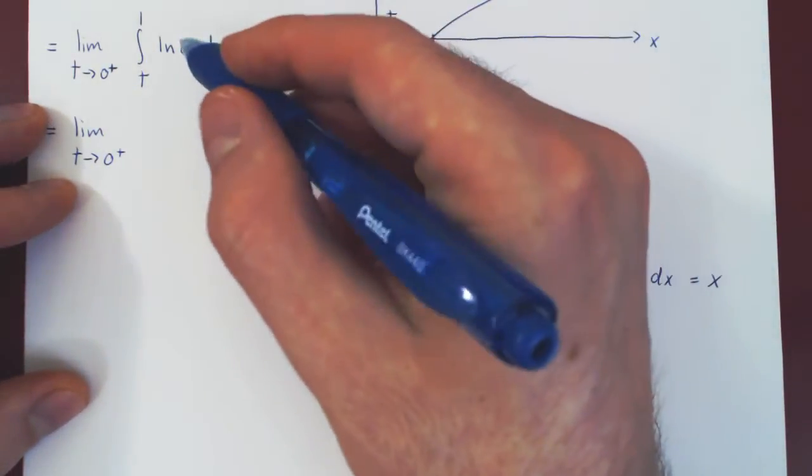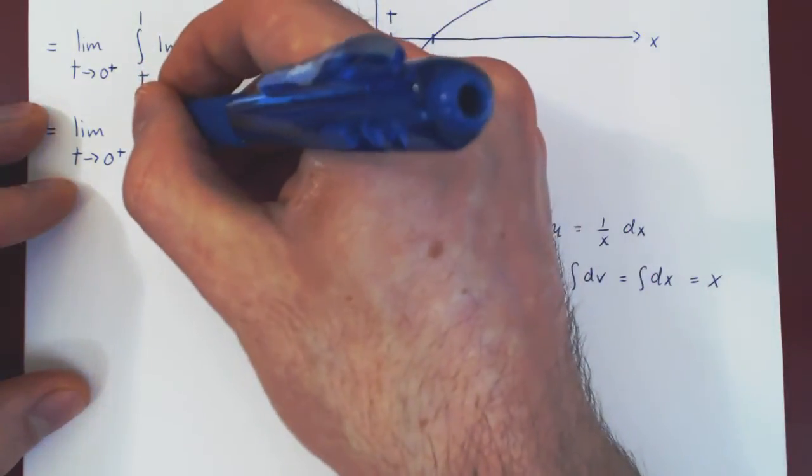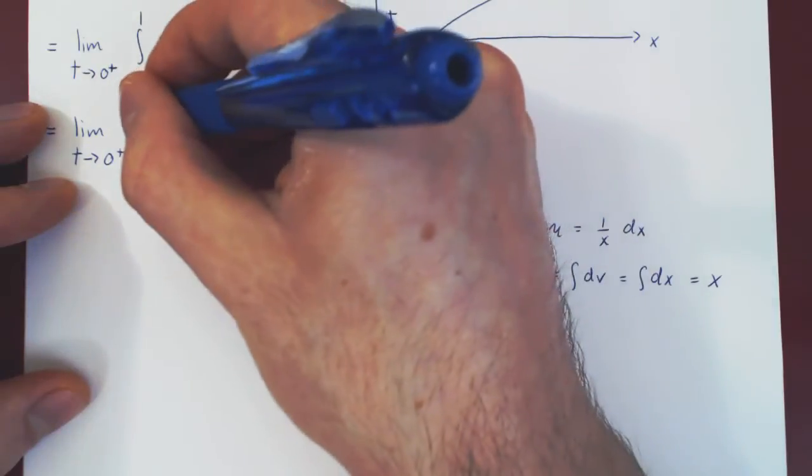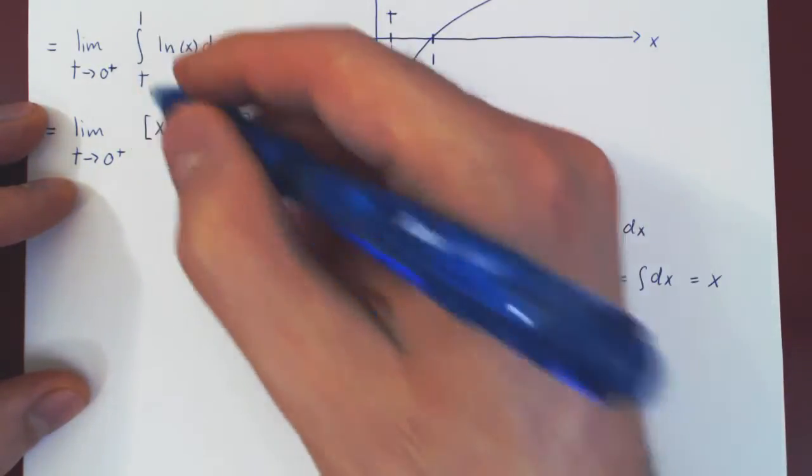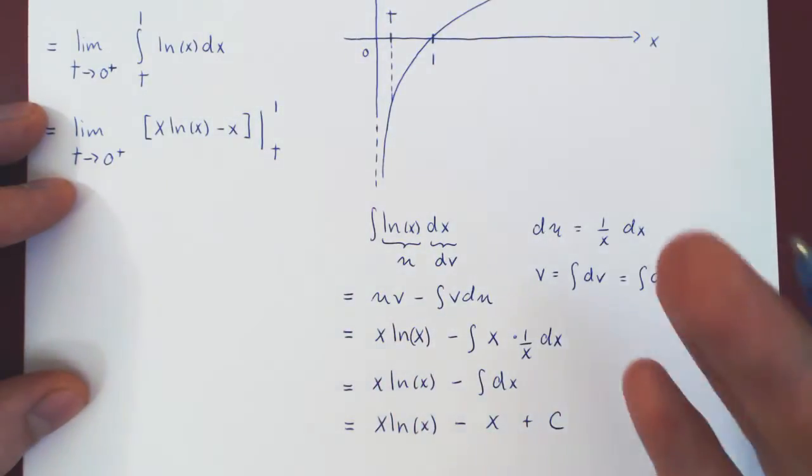To evaluate the definite integral, we need to evaluate our antiderivative, we can drop the plus c. And here if you want, you could factor in x, but I won't do so, I'll leave it as x ln of x minus x. That is our antiderivative, which again we evaluate from t to 1. And this is again the fundamental theorem of calculus.